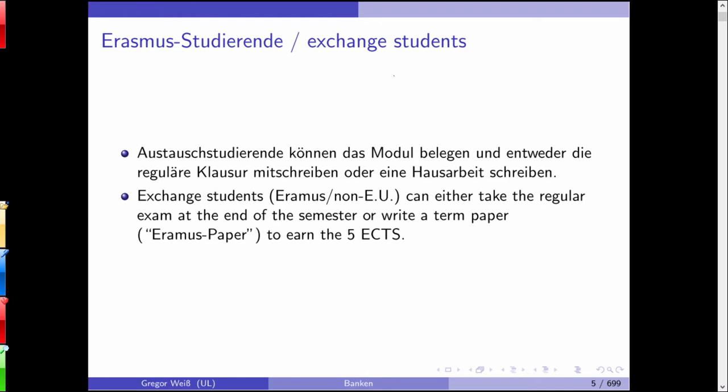Now, who is taking this class as an exchange student? You can either write the exam or you can write an Erasmus paper — you simply write a term paper. You can come to me after a couple of weeks and we can find a suitable topic. I would suggest that you attend the lecture, get an idea of what the introduction to banking is about, and then we can come up with a suitable topic. If you do not want to write a term paper, you can always take the exam at the end. Either way, you can earn the five credit points.